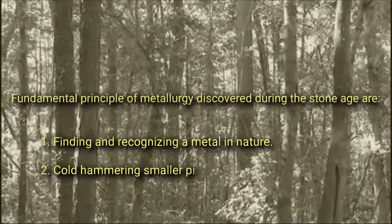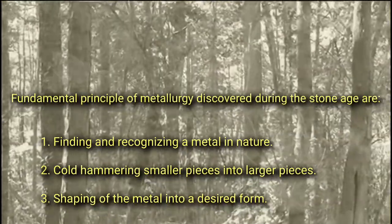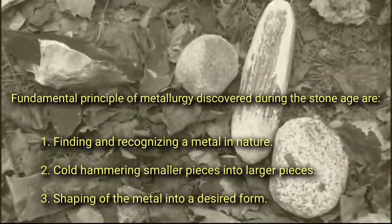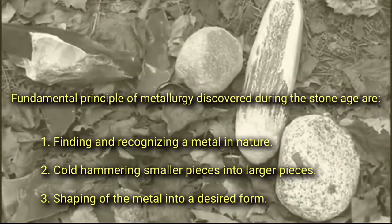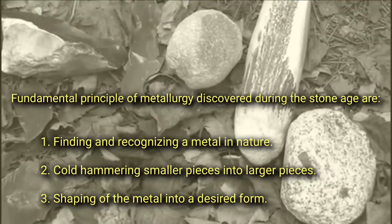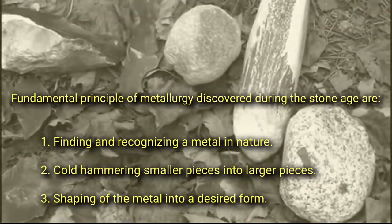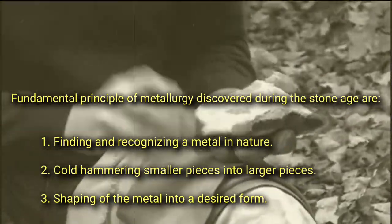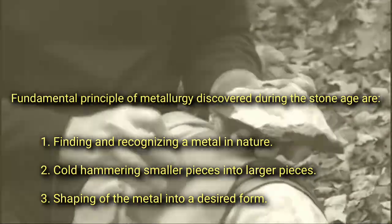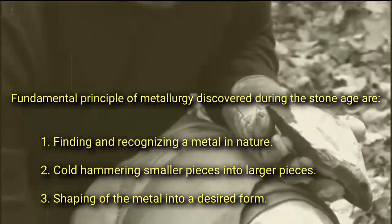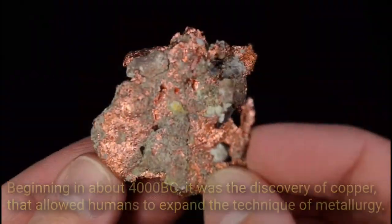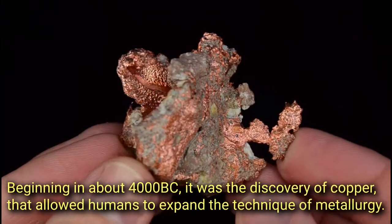Fundamental principles of metallurgy discovered during the Stone Age are: one, finding and recognizing a metal in nature; two, cold hammering smaller pieces into larger pieces; three, shaping of the metal into a desired form. Beginning in about 4000 BC, it was the discovery of copper that allowed humans to expand the technique of metallurgy.